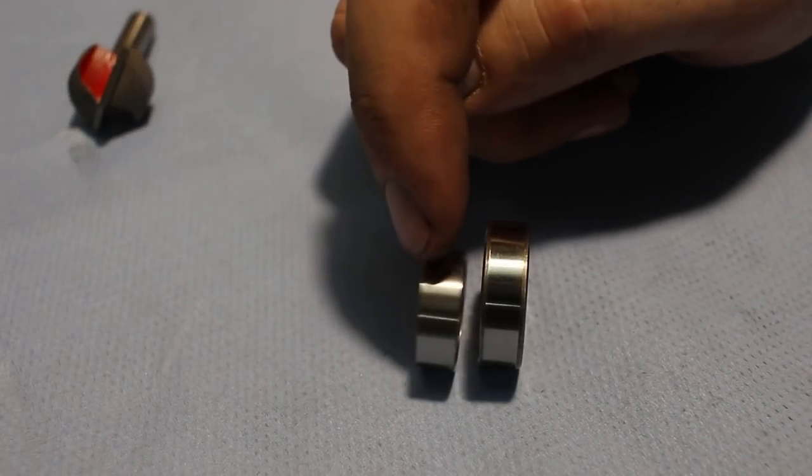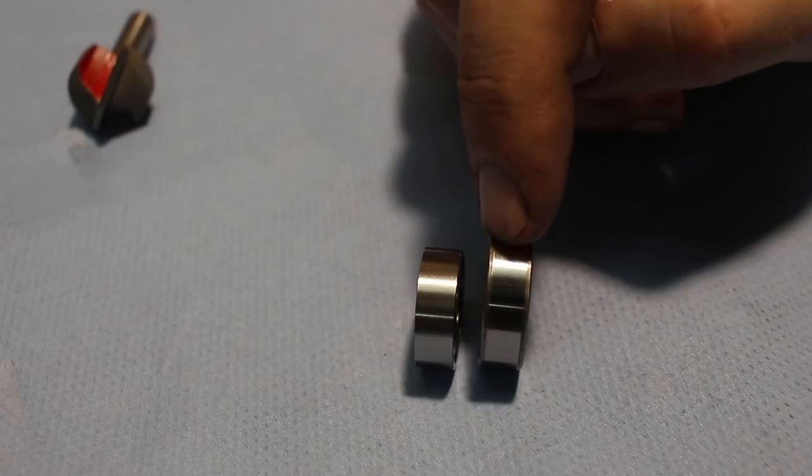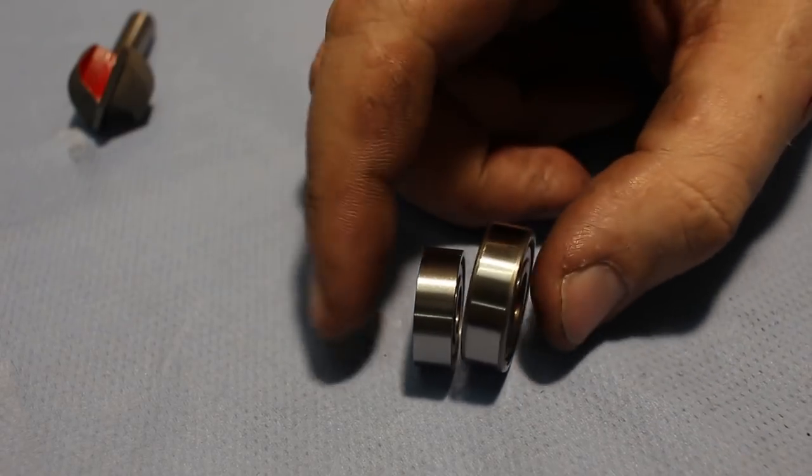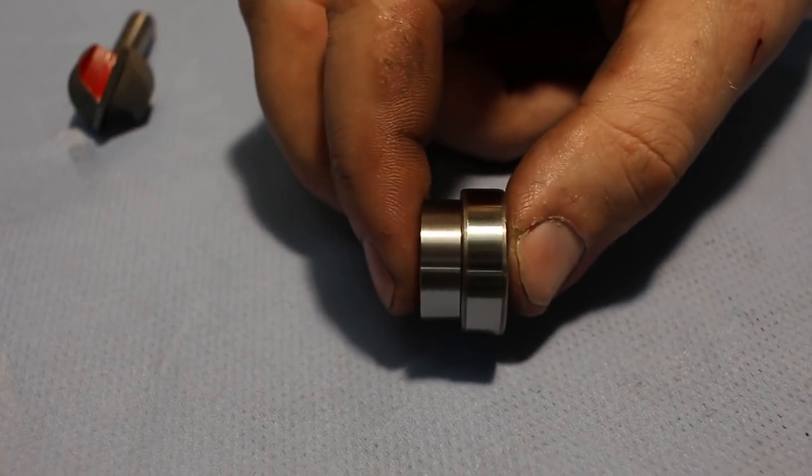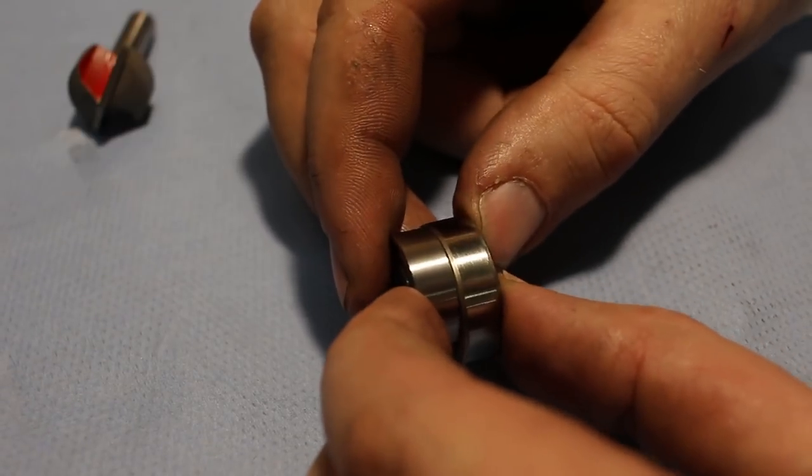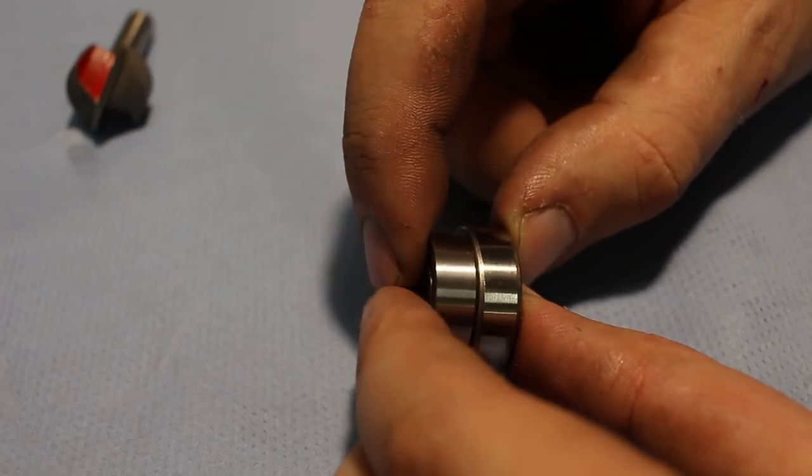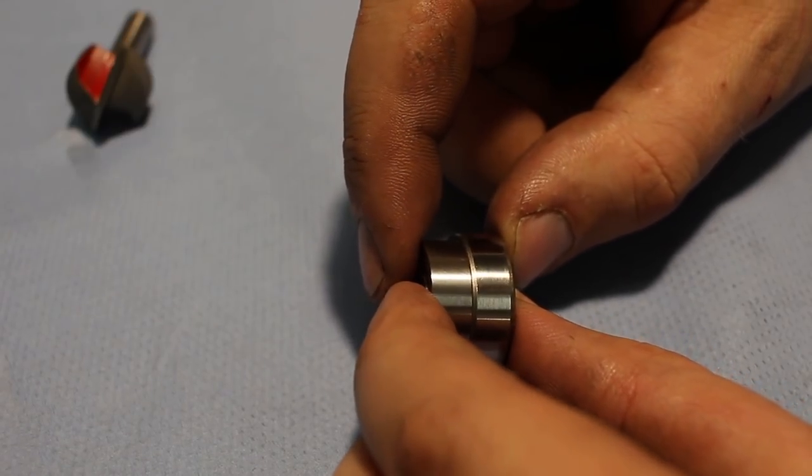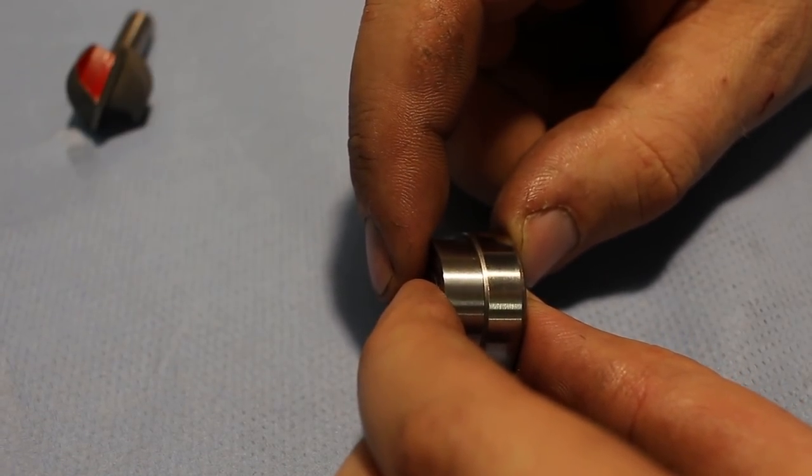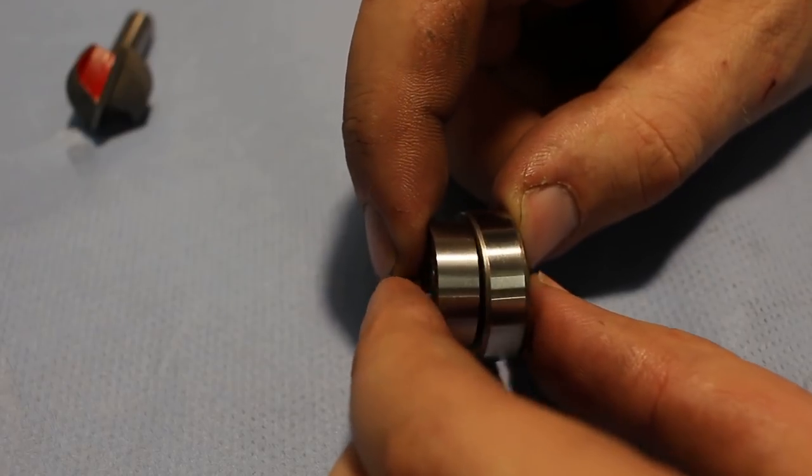Okay, there we go. That's the reground bearing, and that's a brand new SKF bearing just to compare the surface finish. Mine is obviously a little bit coarser, but it's close. I used a 60 grit wheel on the surface grinder.